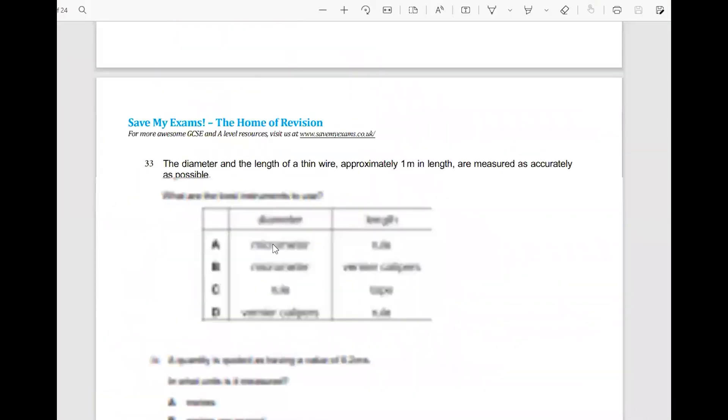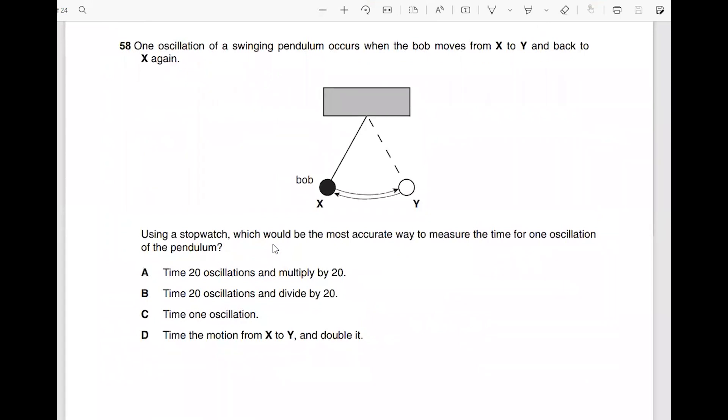Let's do a question on the period of the pendulum. This is one oscillation of a swinging pendulum - occurs when the ball moves from X to Y and back to X again. Using a stopwatch, which would be the most accurate way to measure the time of one oscillation of the pendulum? How will you measure the time period, the oscillation of the pendulum?